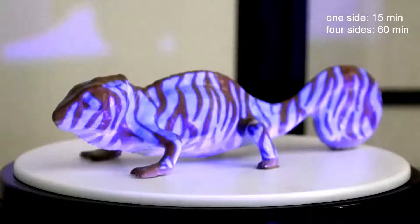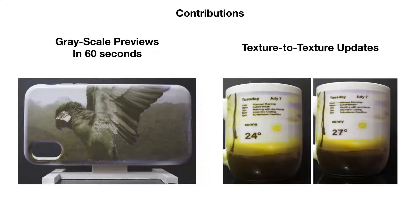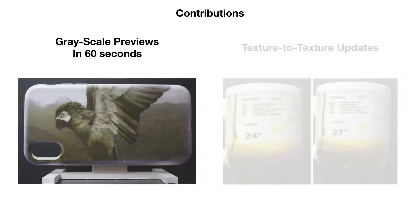Since this is a little too long for fast design iterations where you just want to see directly how an object looks and maybe change something, we implemented two new methods. These are: grayscale previews that only require 60 seconds to reprogram the appearance of an object, and direct texture-to-texture updates that are 11% faster than the color transfer methods in Photochromelion.